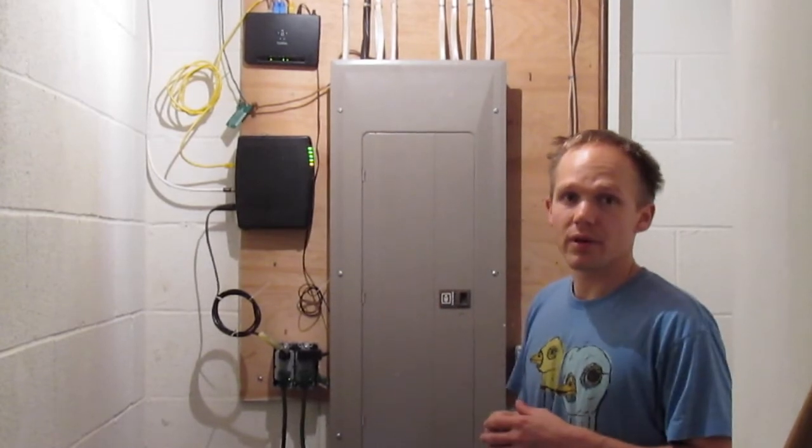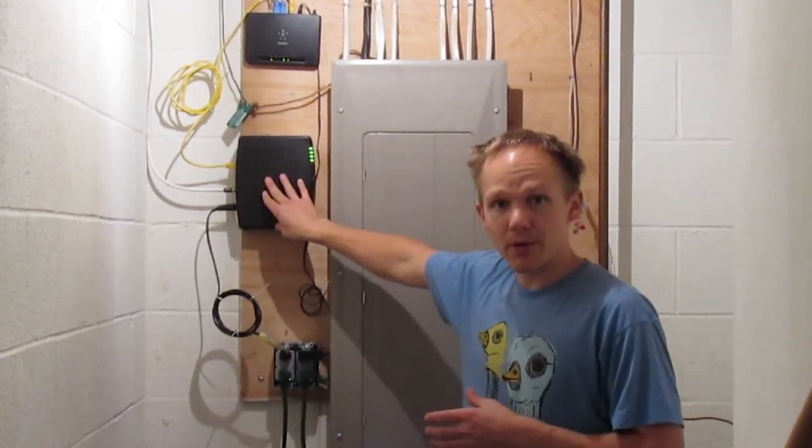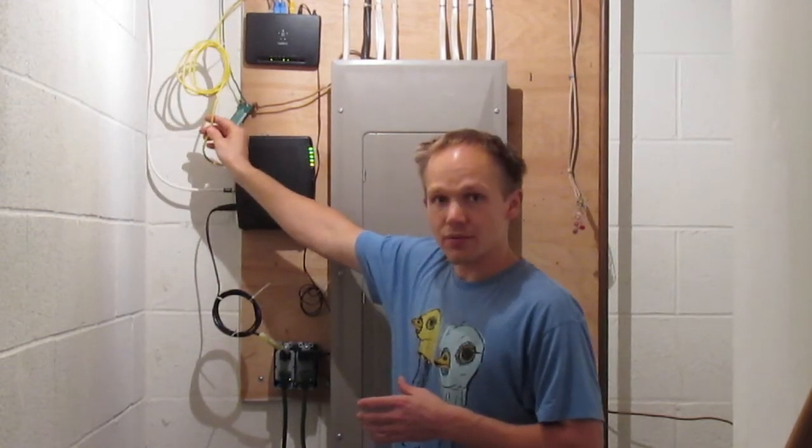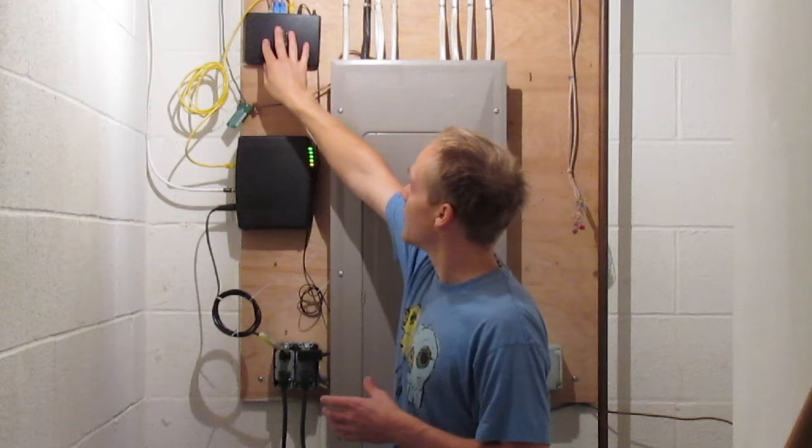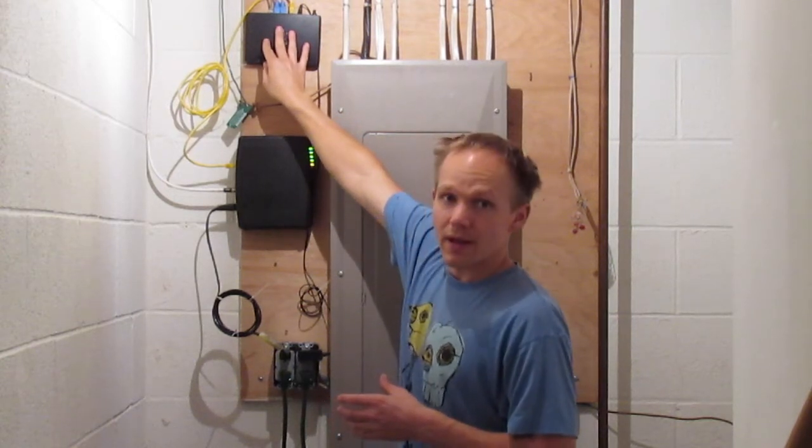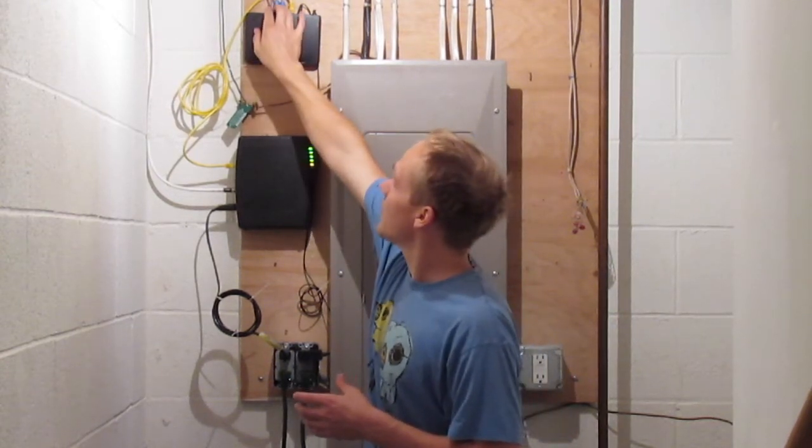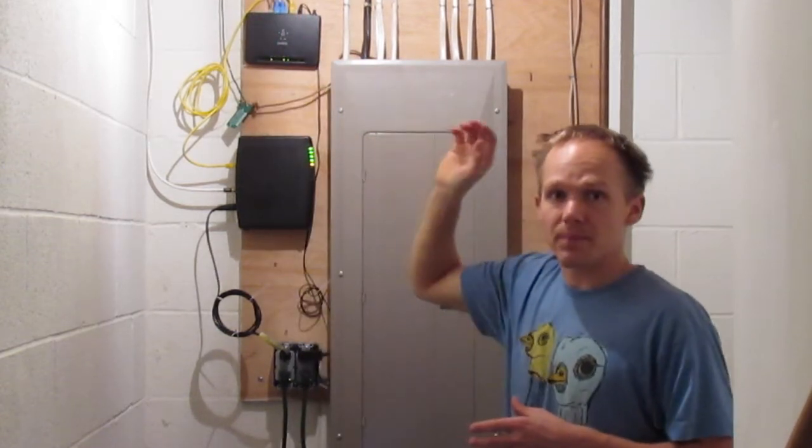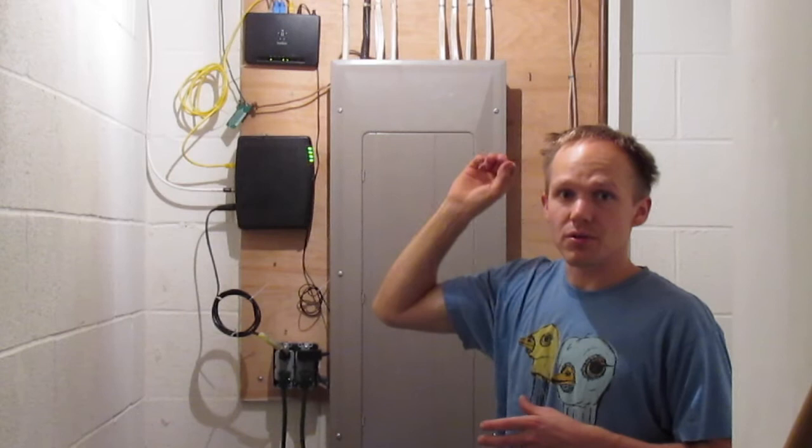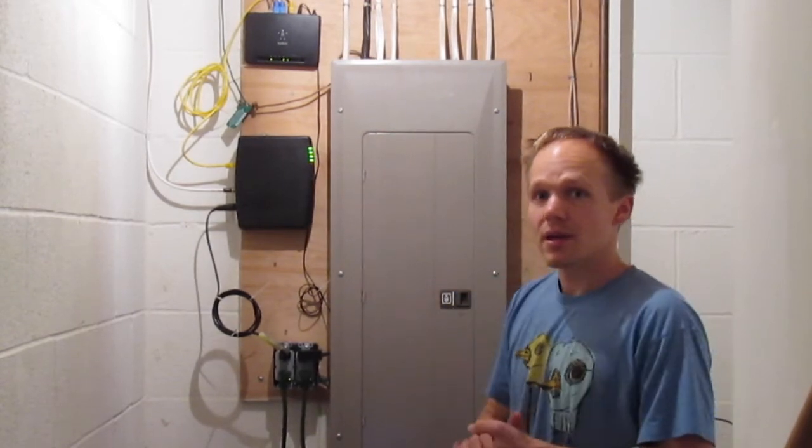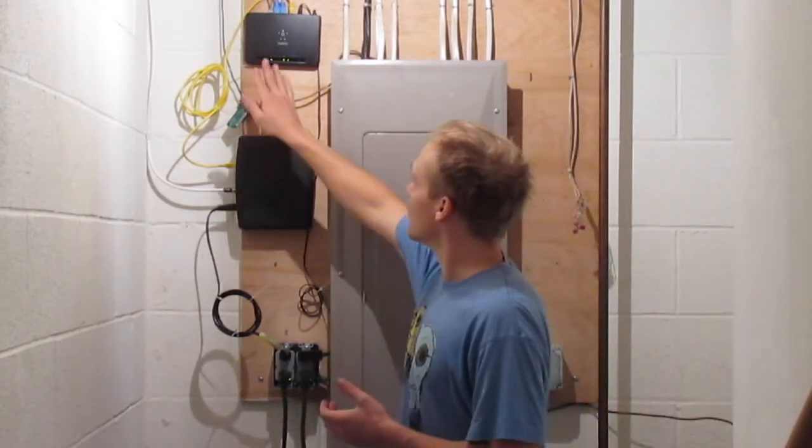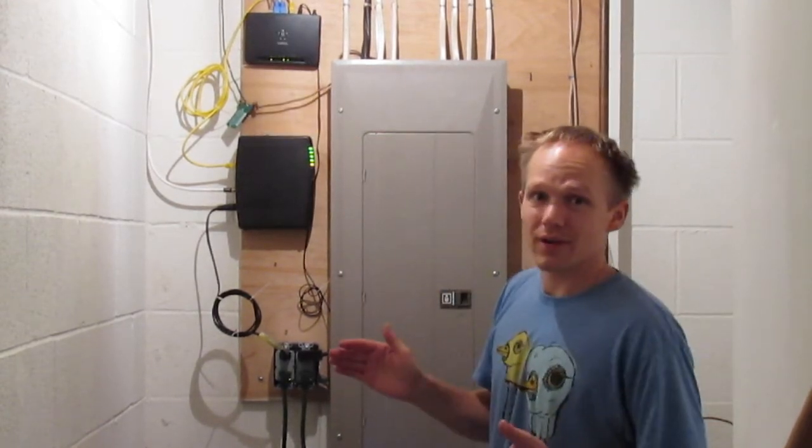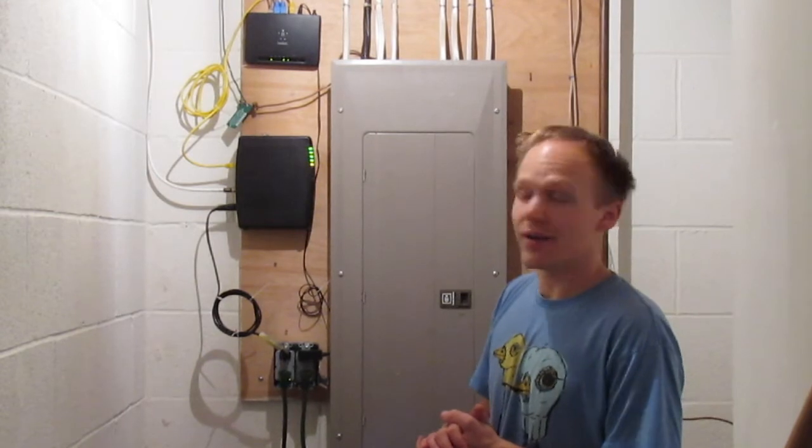My cable modem is sending an internet signal through this ethernet cable to my router, and then my router has three wires coming out of it which are sending internet signals to the rest of the house. My router has no Wi-Fi enabled, and I really don't want to turn it on because Wi-Fi is not healthy.